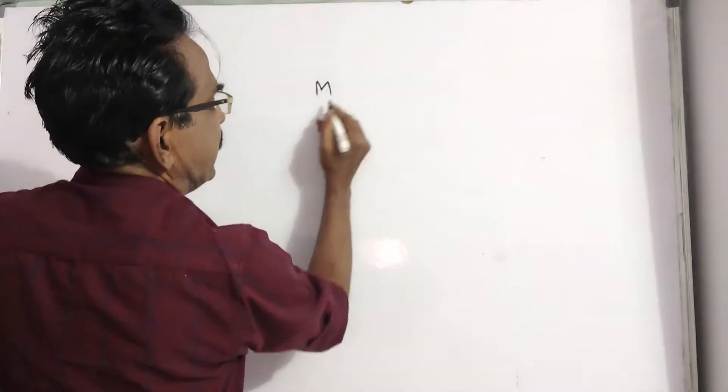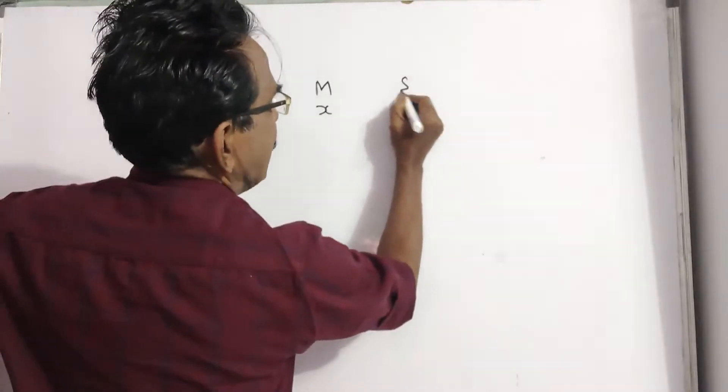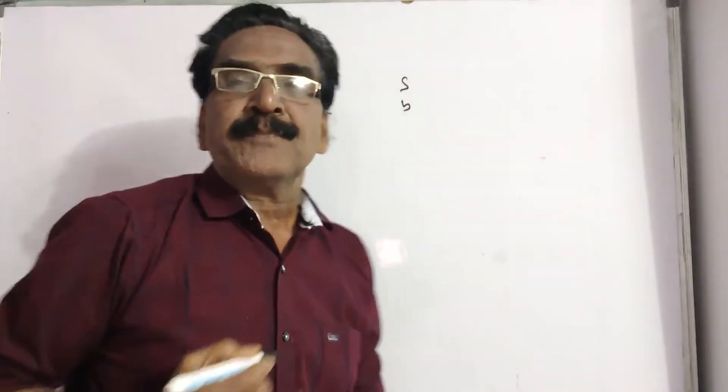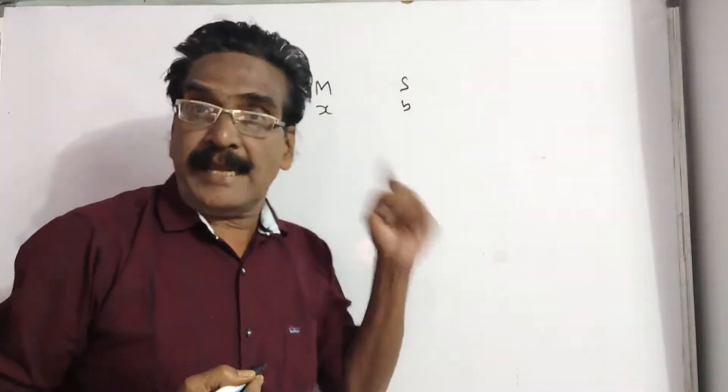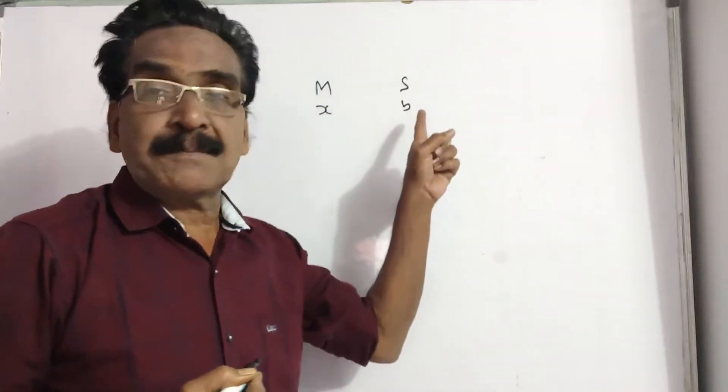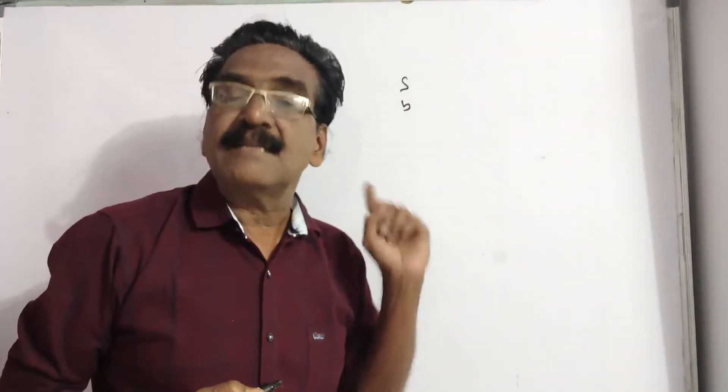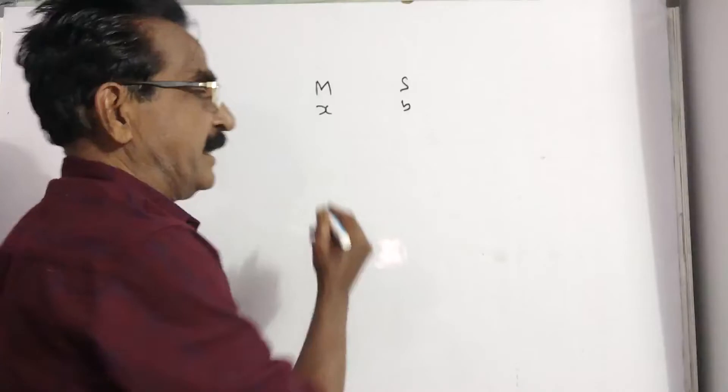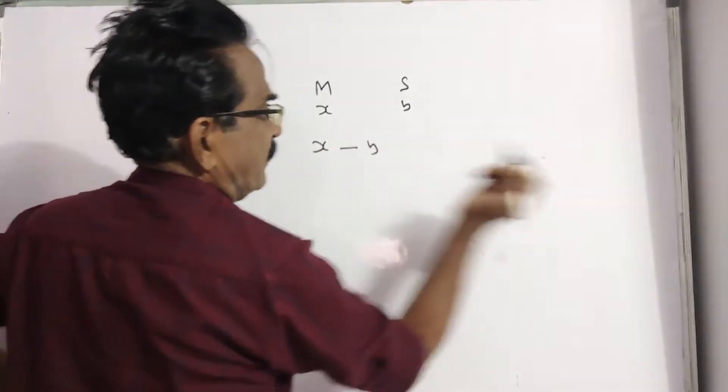Say the man's age is x and son's age is y. See man's age when son was born will be x minus y.